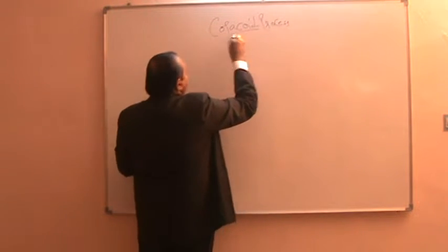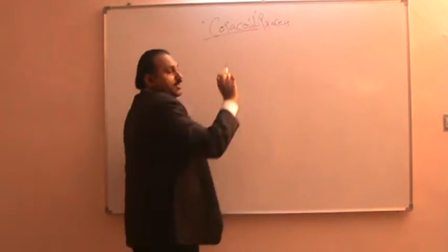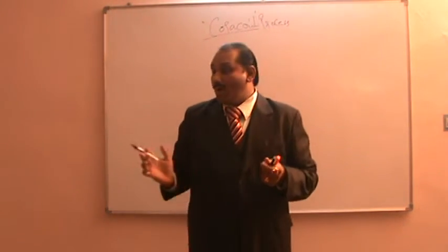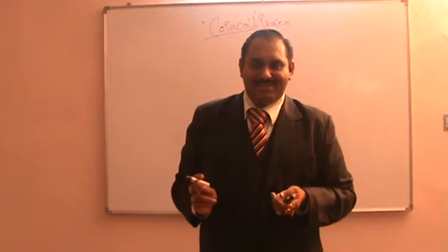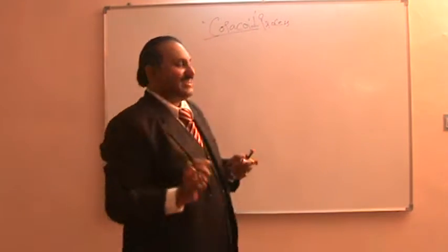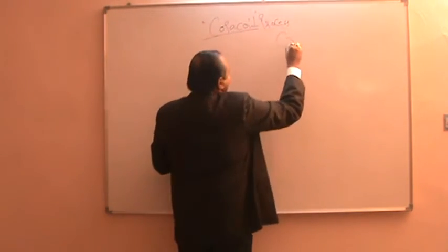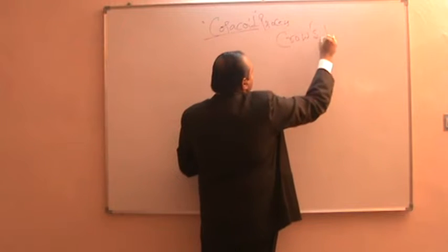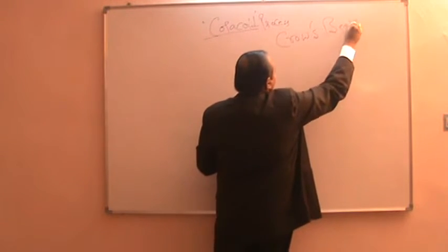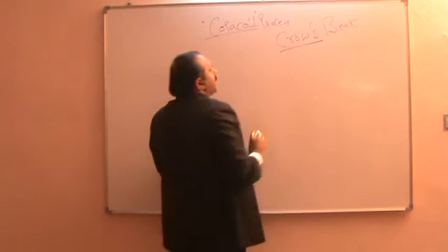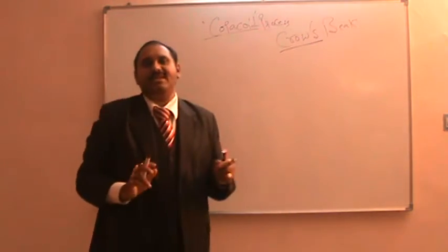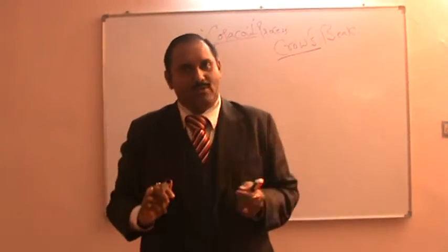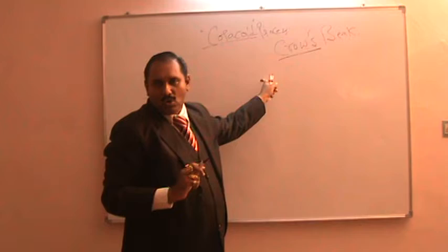Now what do you mean by the word coracoid? Can anyone tell what you mean by coracoid? Crow's beak. That's right. So coracoid means it is crow's beak. It is the beak of a crow. Now you know crow is a vehicle for Lord Shani. You understand Lord Shani is traveling on this crow. So this is crow's beak.